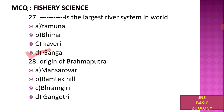Next, from where does the Brahmaputra river arise? A) Manasarovar, B) Ram Tech Hill, C) Brahmagiri, D) Gangotri. The origin of the Brahmaputra is from Manasarovar.